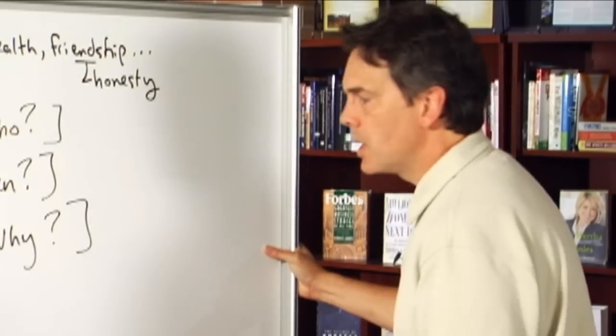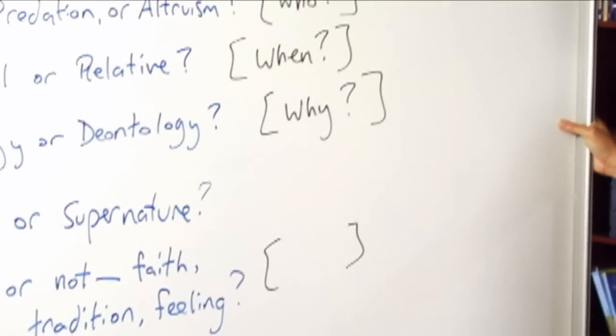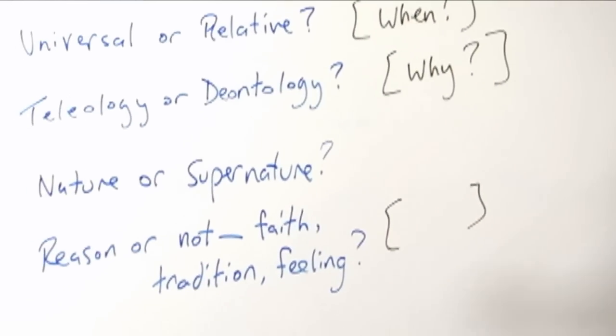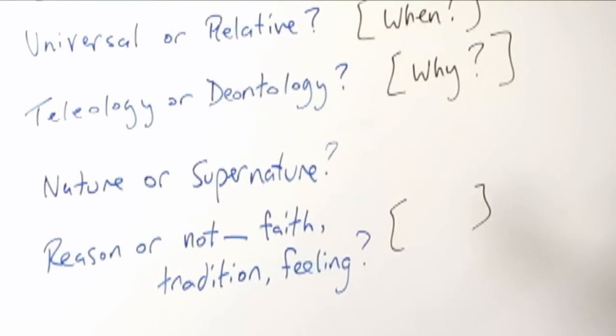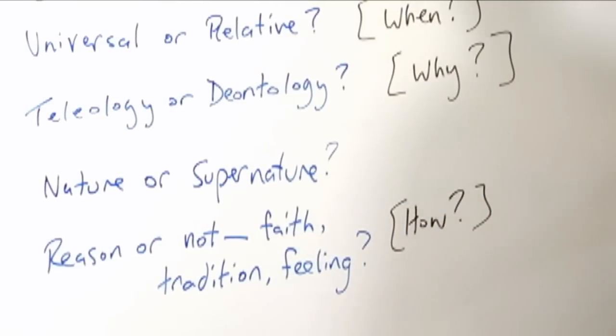Jumping down to number six here. This is the question, an epistemological question about ethical issues. How do we validate them? How do we come to know them? How do we decide what is right here? So the interrogative is the how question.